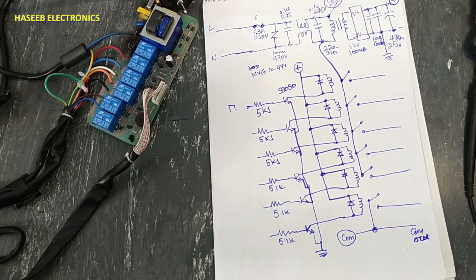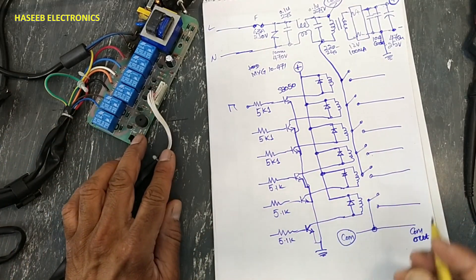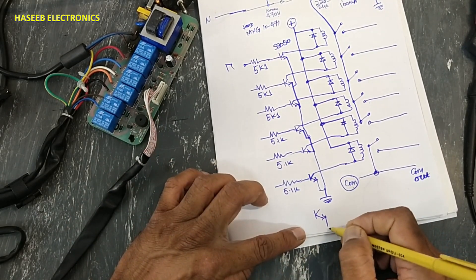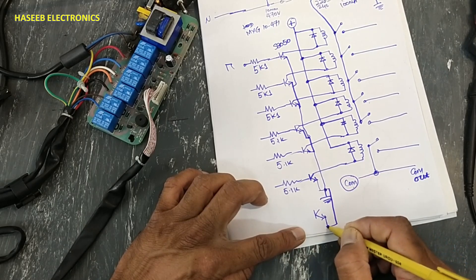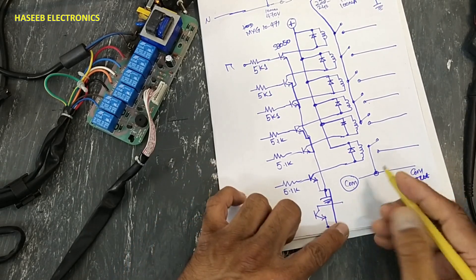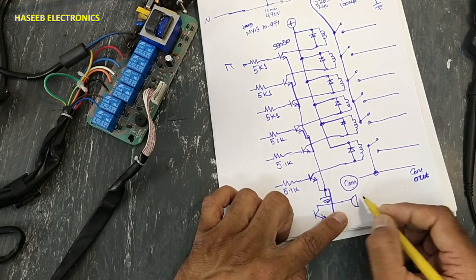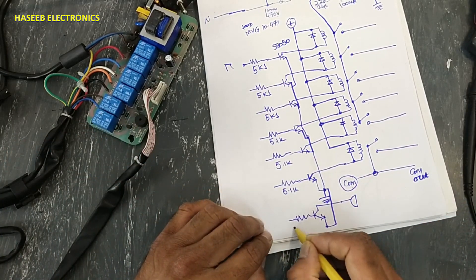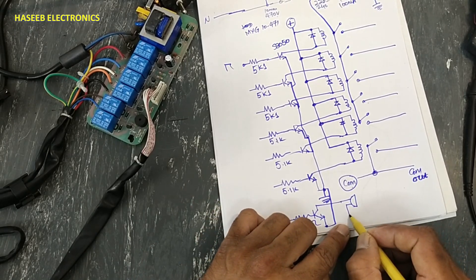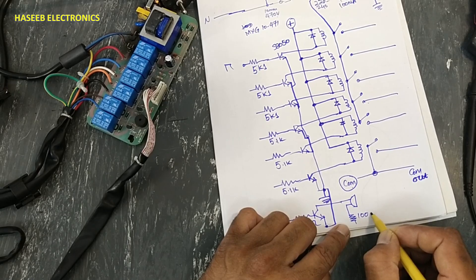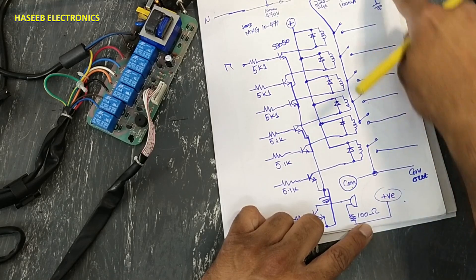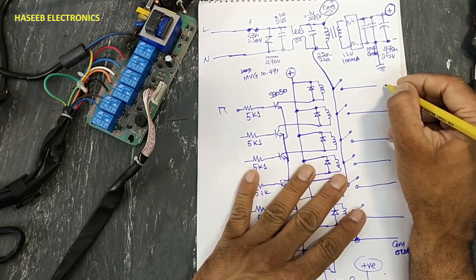At each base, it has a 5.1 kilo ohm resistance. Here is the input signal. Then we have another SS 8050 transistor. It is also connected to the same ground point. And this point, the collector, is connected to this buzzer. 5.1 kilo ohm resistance and this end is connected to 100 ohm resistance, and it is connected to positive.